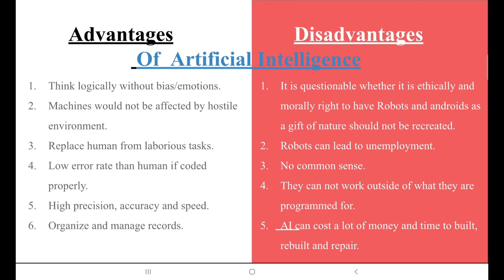Let's talk about the advantages of Artificial Intelligence first. AI can think logically without bias or bleak emotions. Machines would not be affected by hostile environments, even while digging out mines. They can replace humans from laborious tasks. They have a low error rate compared to humans if coded properly — and the point to be noted is: if coded properly. They also offer high precision, speed, and accuracy, and can organize and manage records.